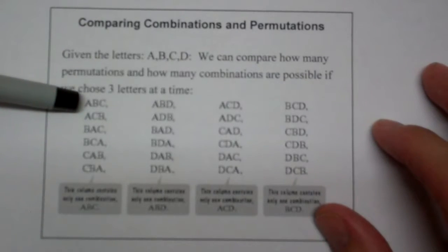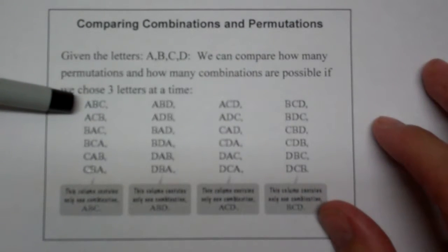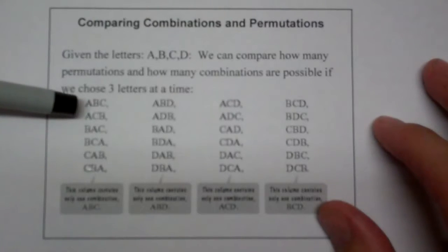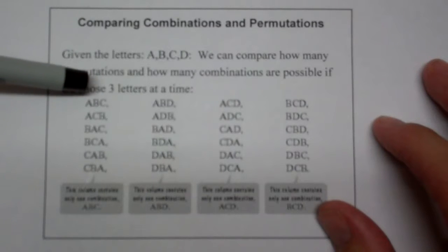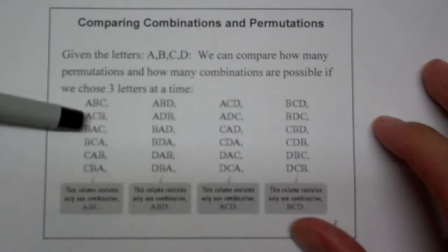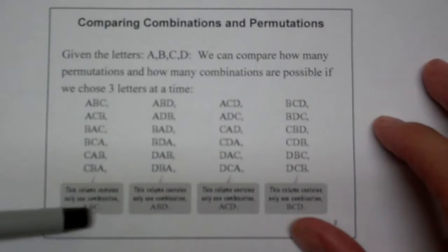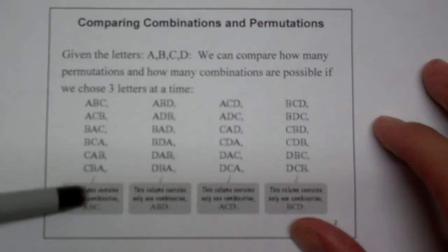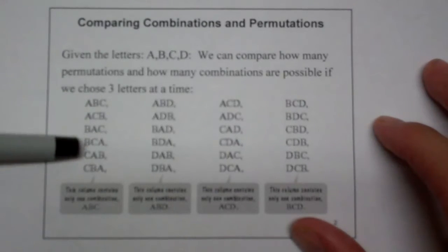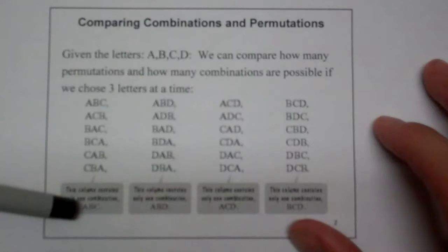But what if your mom just says, pick three toys and throw them in your overnight bag because you're going over to Grandma's house? Then it really doesn't matter whether you have a car, a G.I. Joe, and a teddy bear, or a car, a teddy bear, and a G.I. Joe — because really these all contain a car, a teddy bear, and a G.I. Joe in the bag. So a permutation — rank matters — and you get a bunch of these, whereas a combination — rank doesn't matter — and all of these reduce down to this simple case.